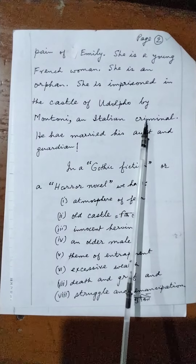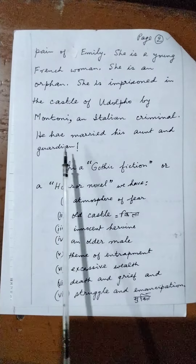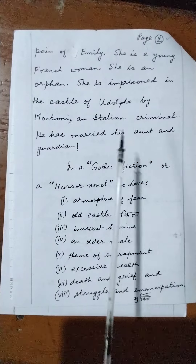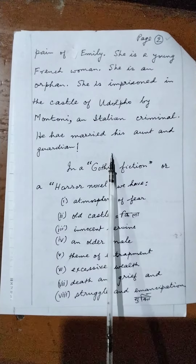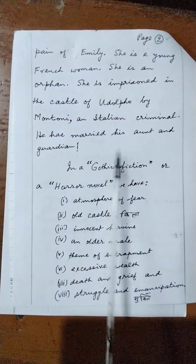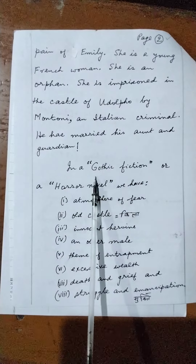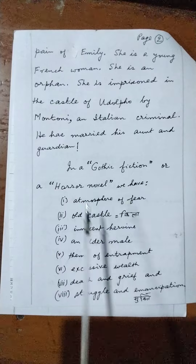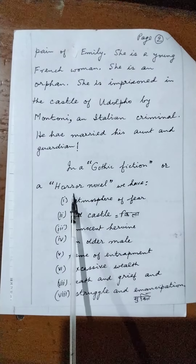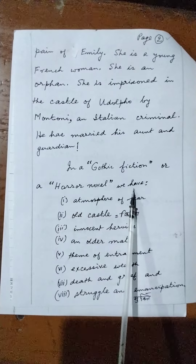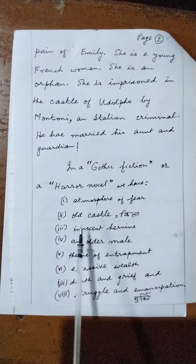Montoni has married Emily's aunt and guardian. He is the villain of the story. This is Gothic fiction. In Gothic fiction, we have an atmosphere of fear and horror.